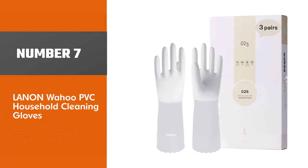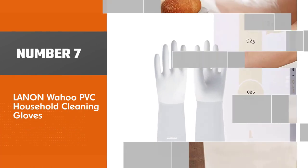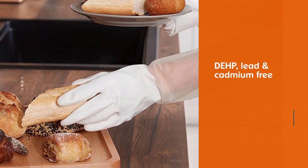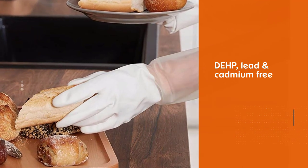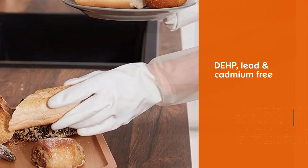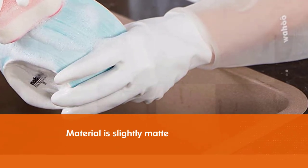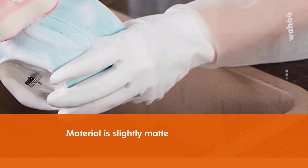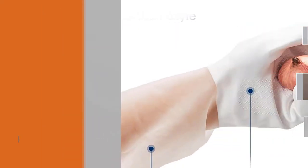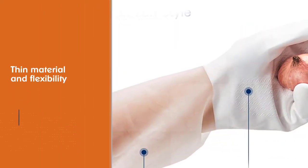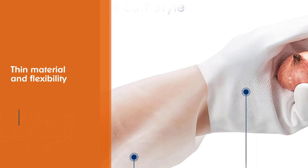Number seven: Lanan Wahoo PVC Household Cleaning Gloves. Being latex, DEHP, lead, and cadmium free, they are specifically marketed for food use in the kitchen. The Lanan Wahoo did receive a high comfort rating during testing. The material is slightly matte on the outside and soft on the inside. The thin material and flexibility help the gloves to feel breathable.